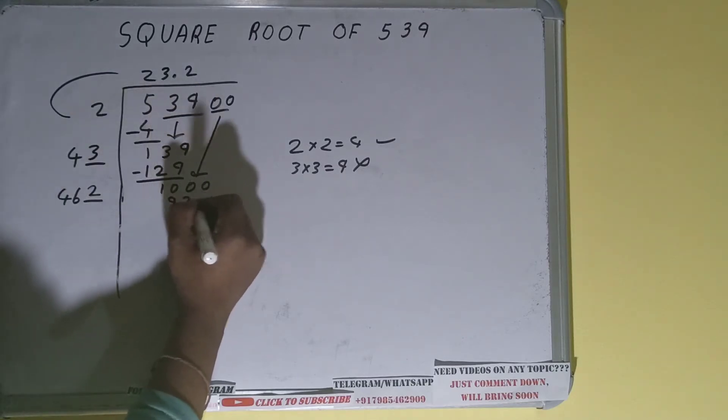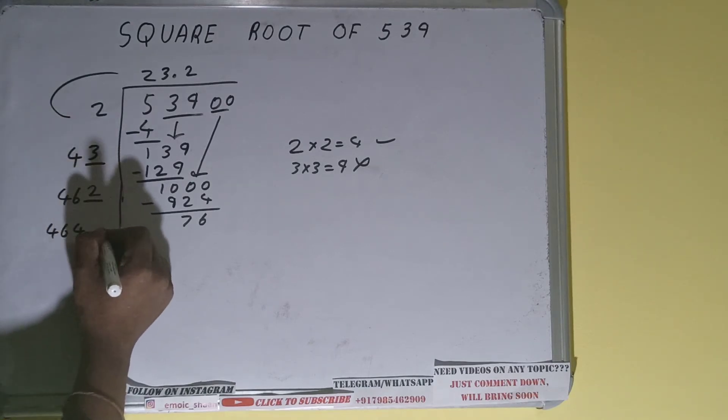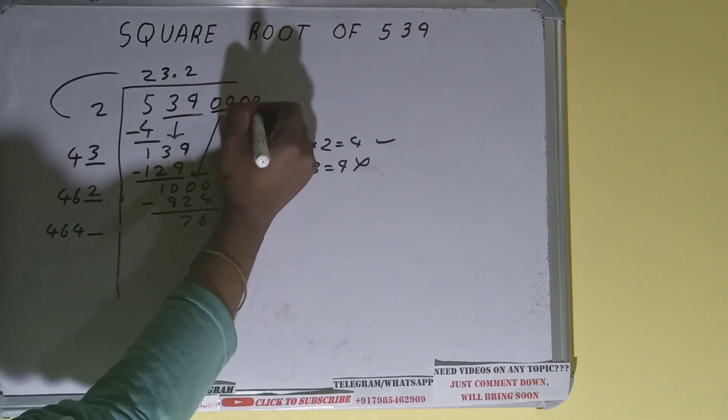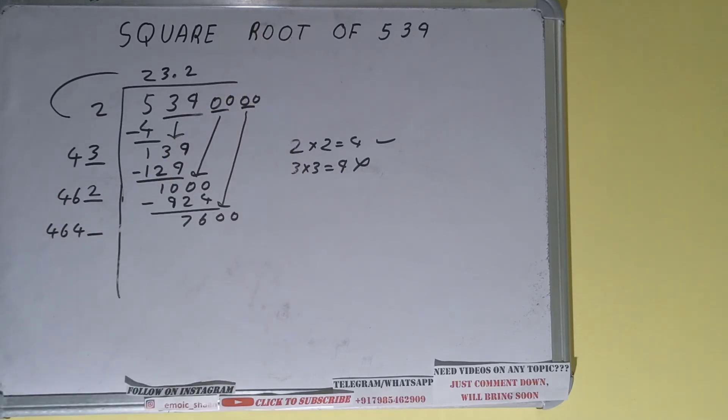...will give 924, and on subtracting 76 will be left. Now 462 into two we did, so add both. So 462 plus 2 will be 464, and one digit extra. And this number we need to make it big, so bring the next pair of zeros down and it will become 7600.